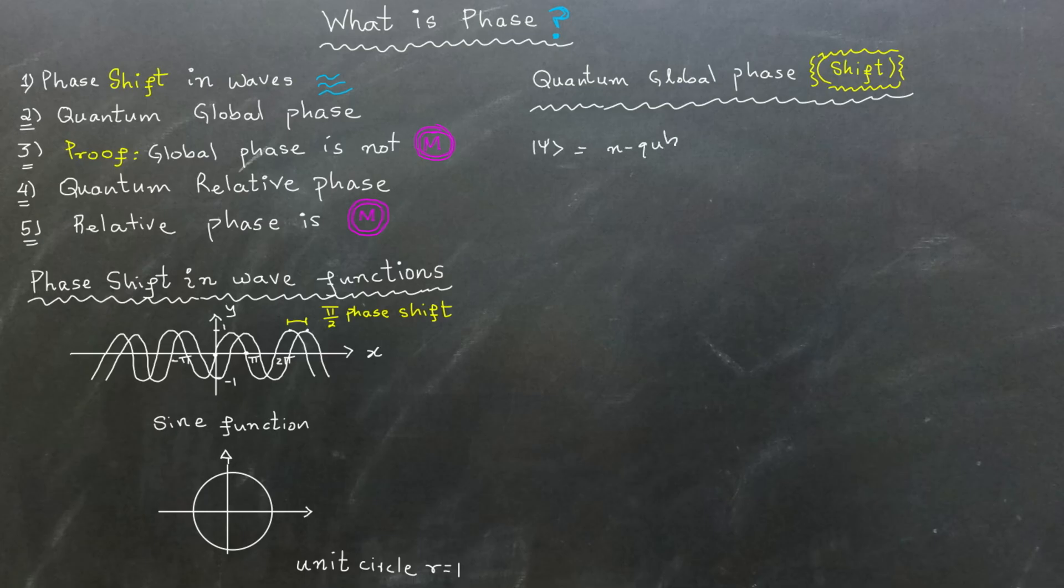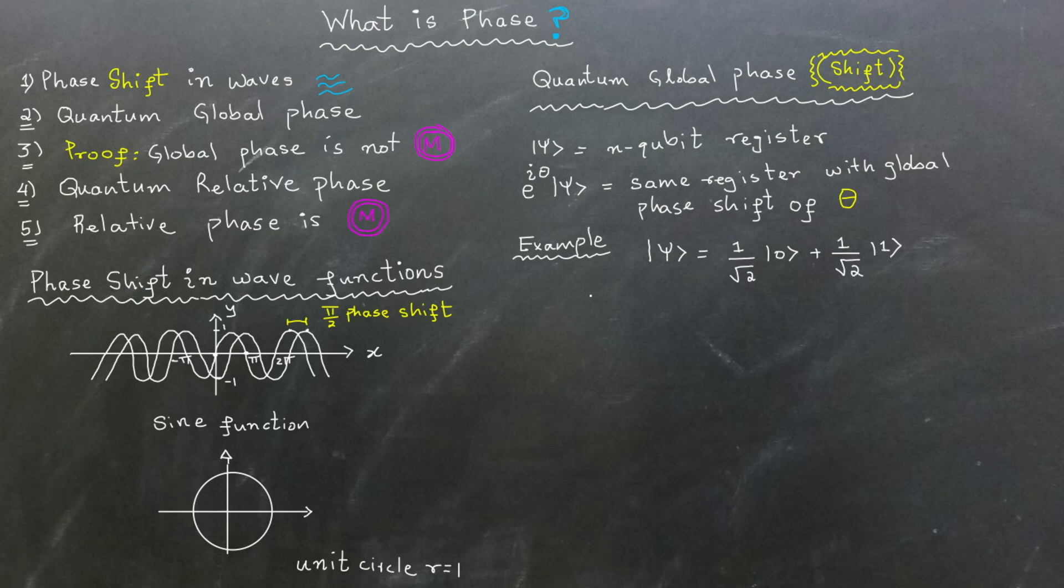Consider a quantum state or an n-qubit register. If we multiply this entire register by Euler's number raised to the power i theta, this is termed as a global phase shift of theta radians. For example, suppose we have a quantum register ket psi equals 1 over square root of 2 ket 0 plus 1 over square root of 2 ket 1.